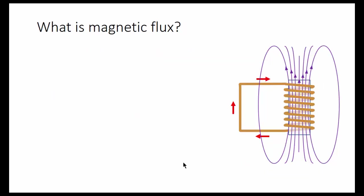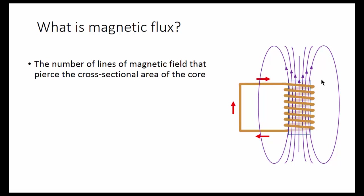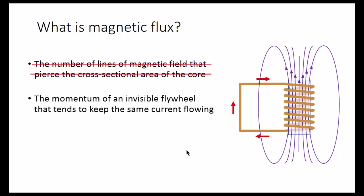Back to the question: what is magnetic flux? It is the number of lines of magnetic field that pierce the cross-sectional area of the core. There's a mathematical description of that, but for our purposes, this definition is too complicated. We can think of magnetic flux as the momentum of an invisible flywheel that tends to keep the same current flowing and resists change. So when you see lines of magnetic force going through an inductor, use your vivid imagination to visualize a turning flywheel that keeps the current flowing.